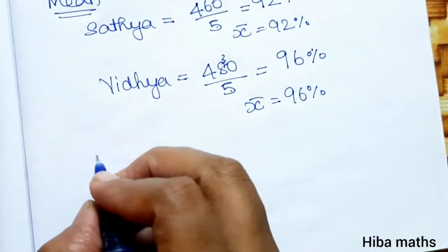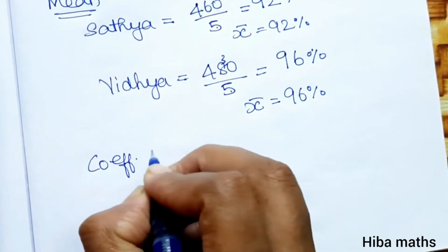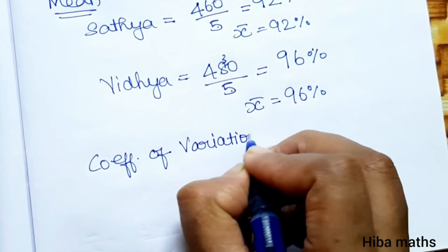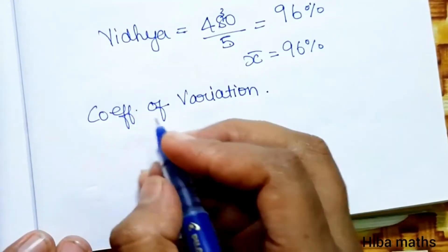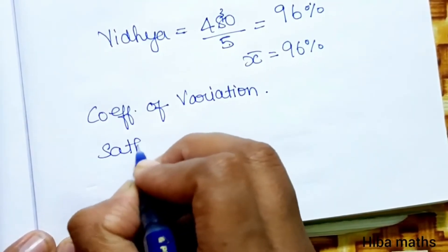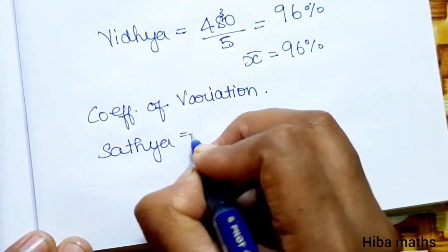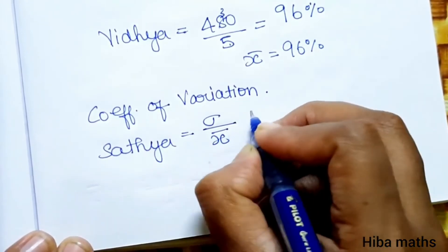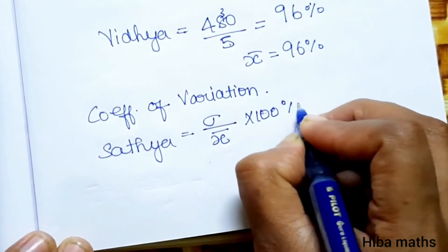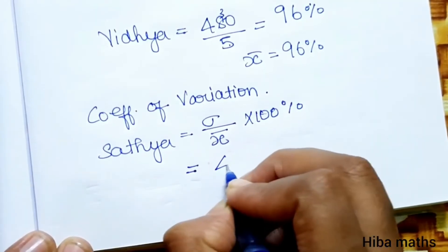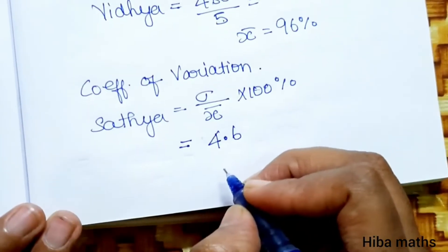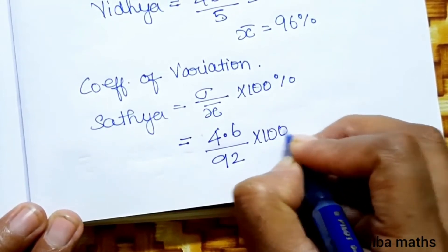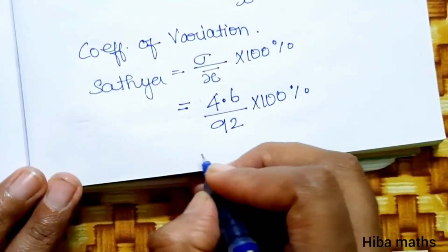Now we calculate the coefficient of variation. The formula is: CV = (standard deviation / mean) × 100%. For Satya: CV = 4.6 divided by 92, into 100%.